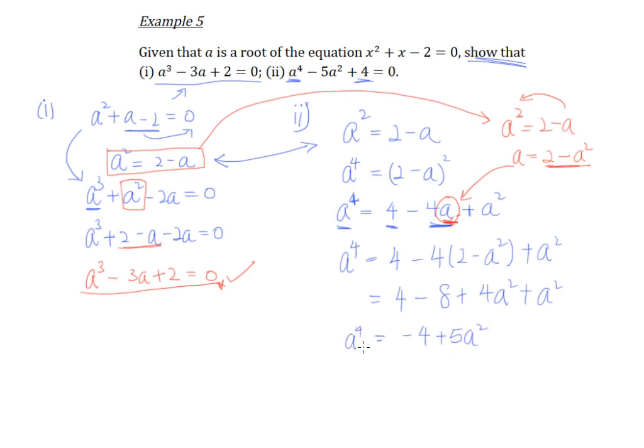And hey, it does look a bit familiar. And you realize that, hey, if all I need to do next is just to shift everything to the left hand side, we end up with a power of 4 minus 5 a squared plus 4 equals to 0. And there you go. This is how we show it.